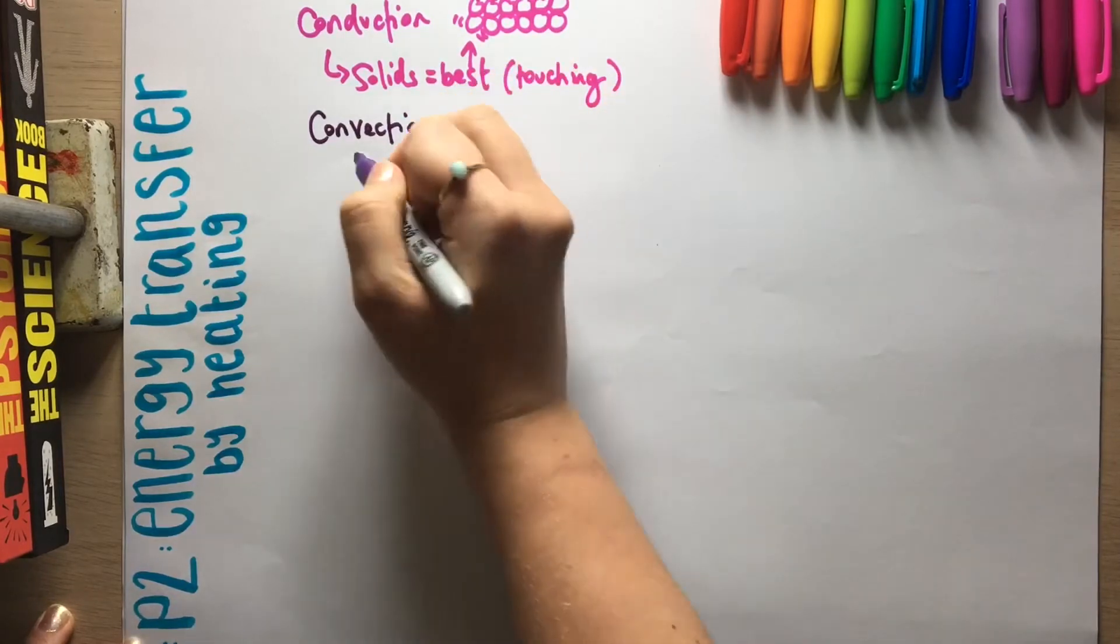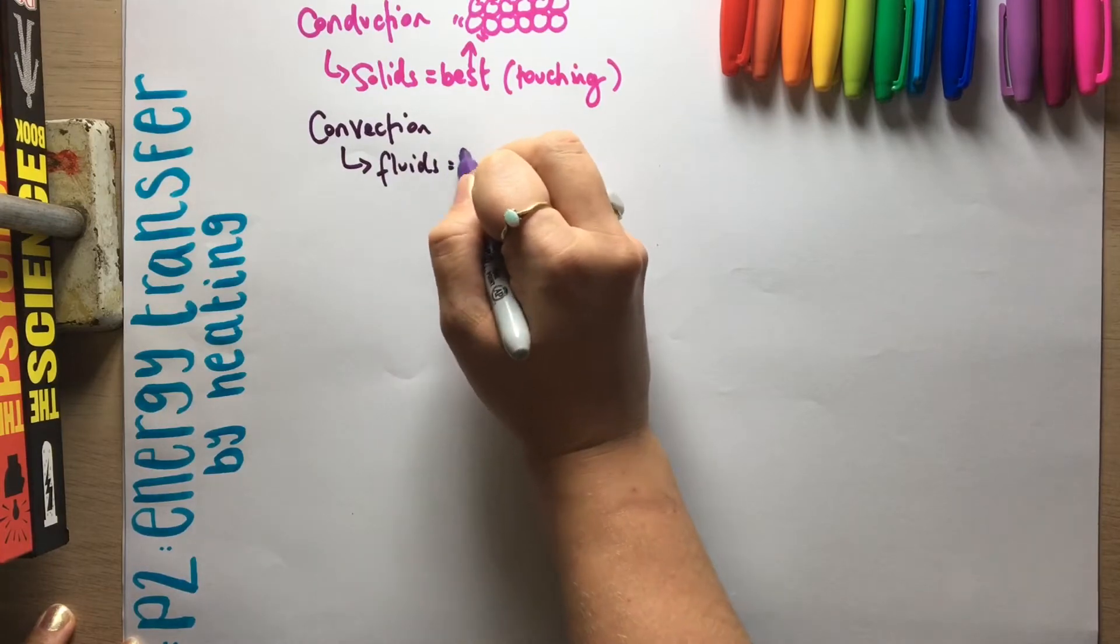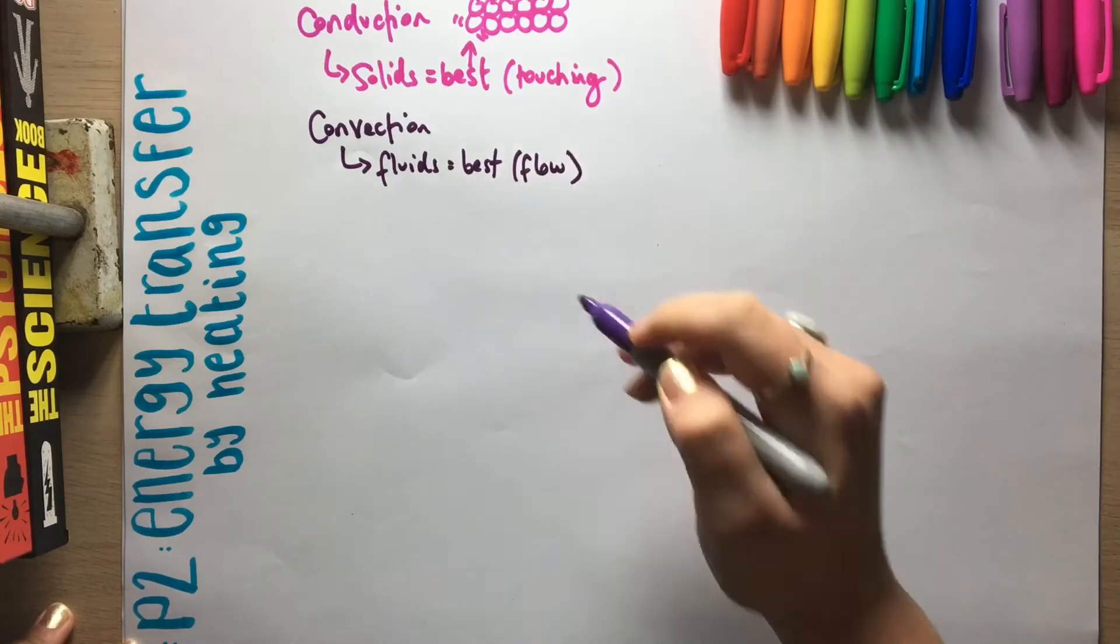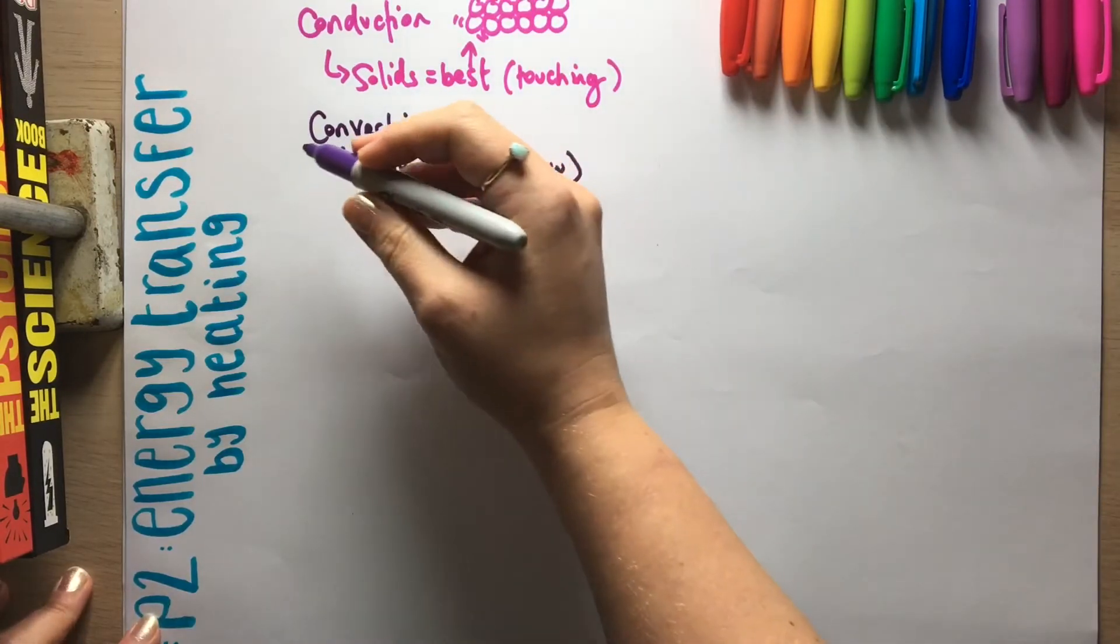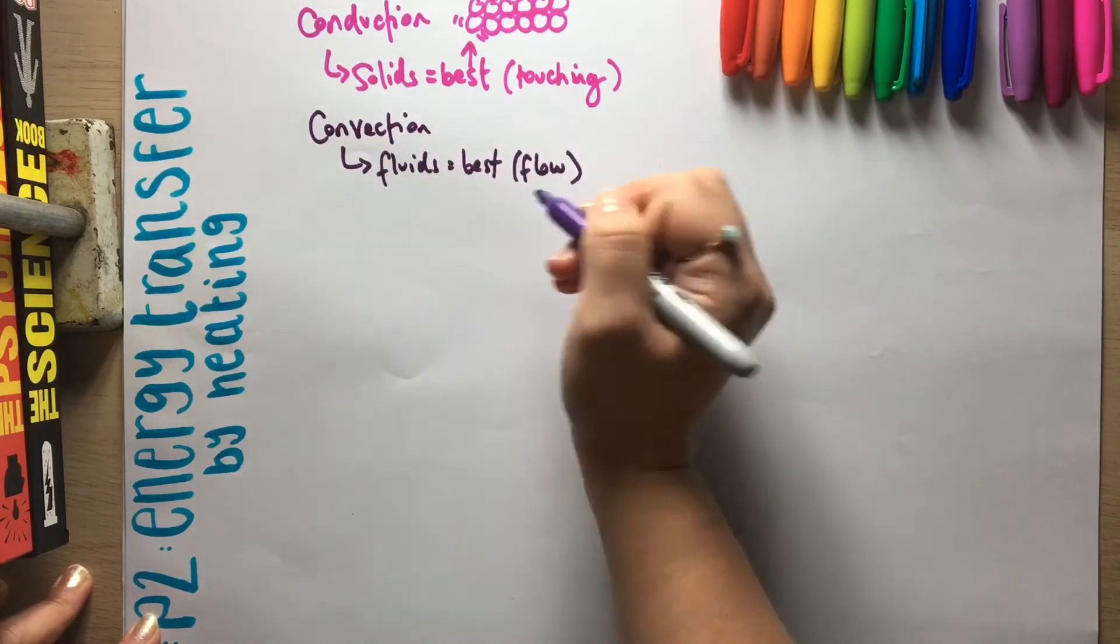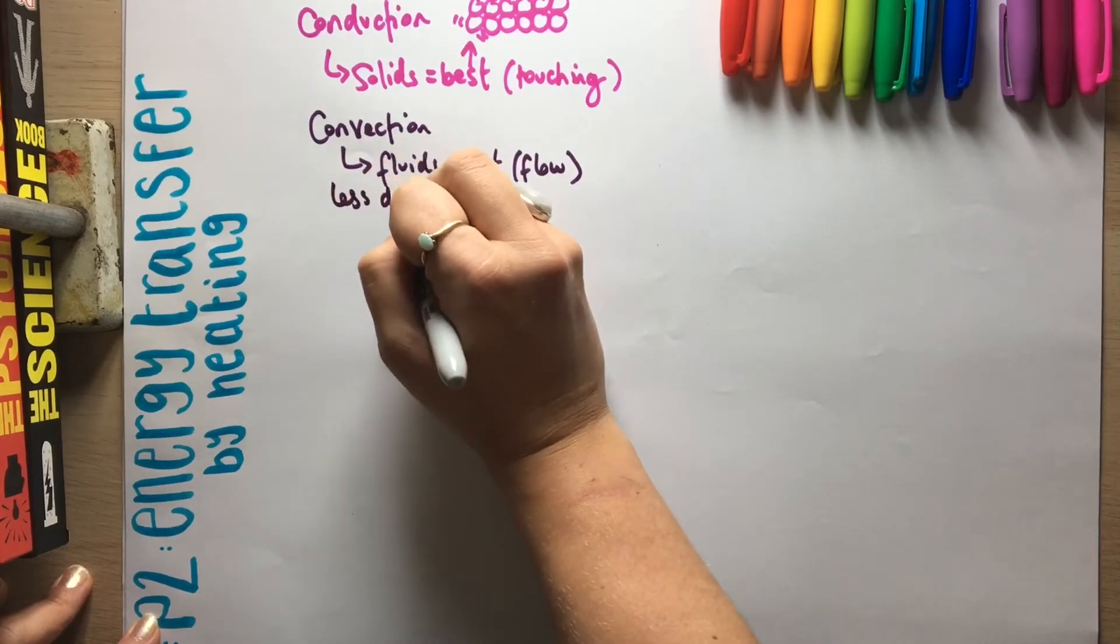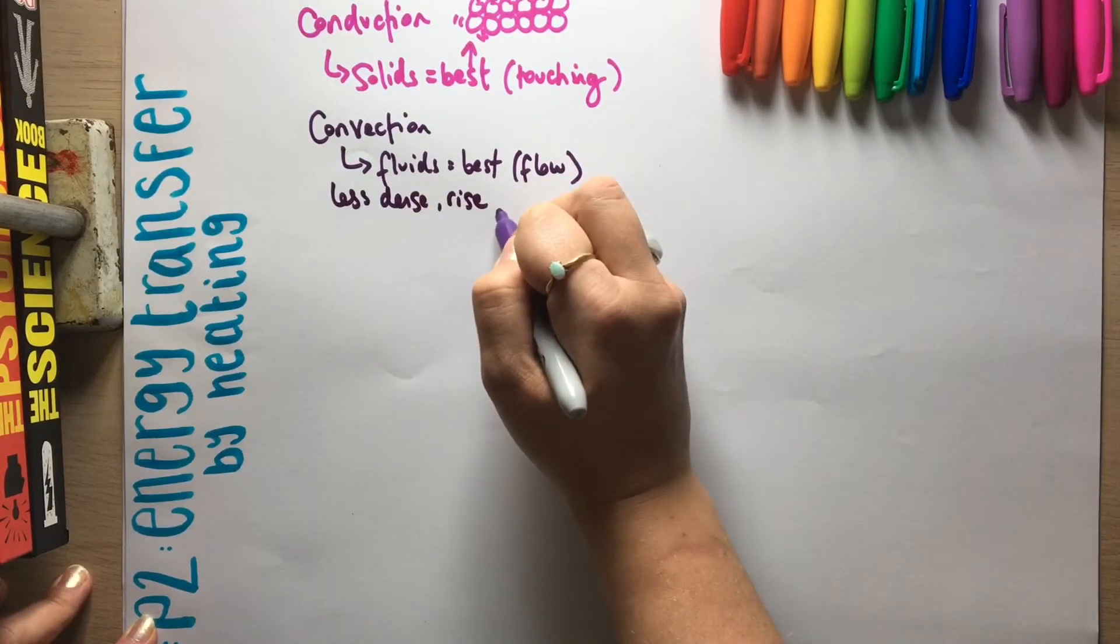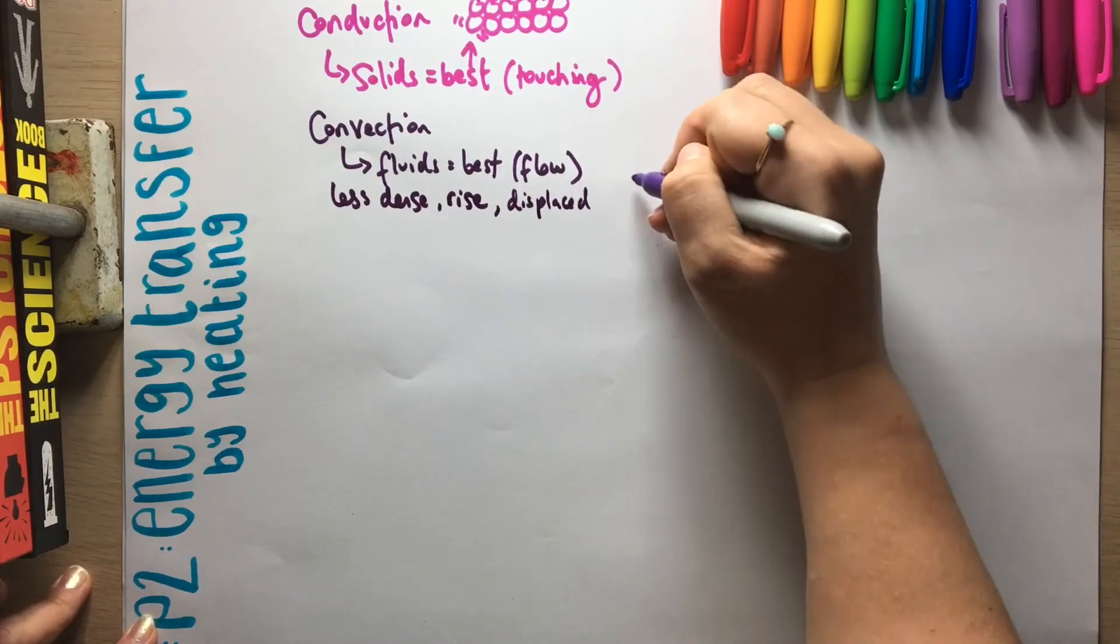And this happens best in fluids, and that's because they can flow. So fluids being gases and liquids. So in general, this is when the particles heat up, they become less dense, and so they rise and then they get displaced.